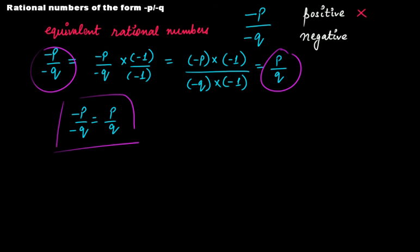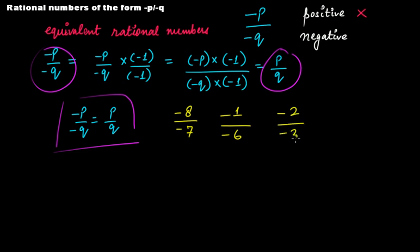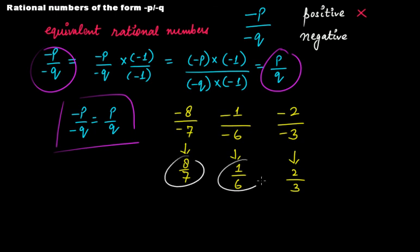Examples: minus 8 over minus 7 can be written as 8 over 7; minus 1 over minus 6 equals 1 over 6; minus 2 over minus 3 equals 2 over 3. These are all positive rational numbers.